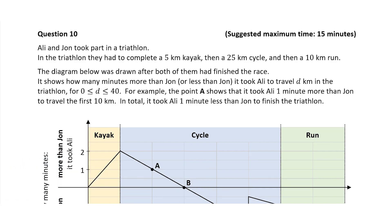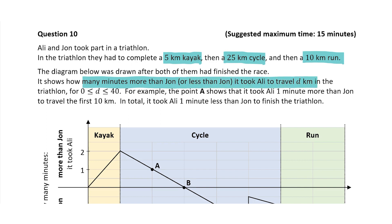In this question we are told that Ali and John took part in a triathlon. They had to complete 5 kilometers of a kayak, a 25 kilometer cycle and a 10 kilometer run. We're given a diagram which was drawn after both had finished the race, and the diagram shows how many minutes more than John or less than John it took Ali to travel d kilometers in the triathlon. The graph is a bit confusing so you do need to take a minute to really understand what it's representing.